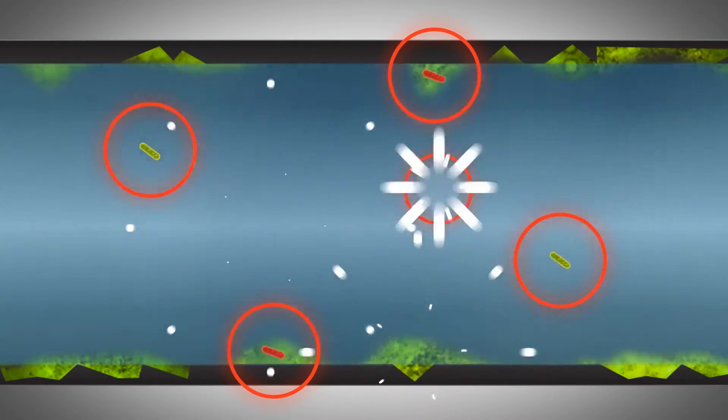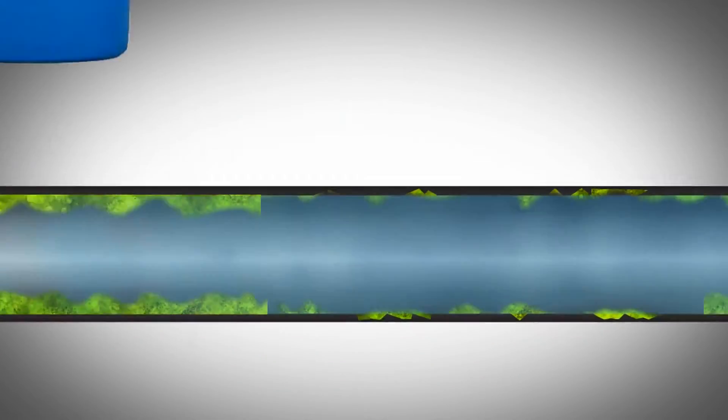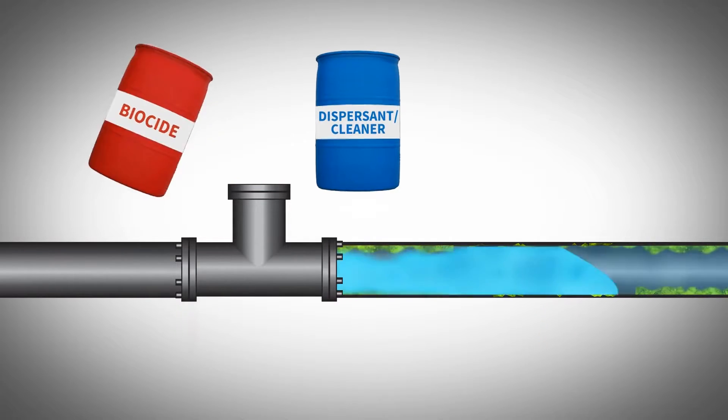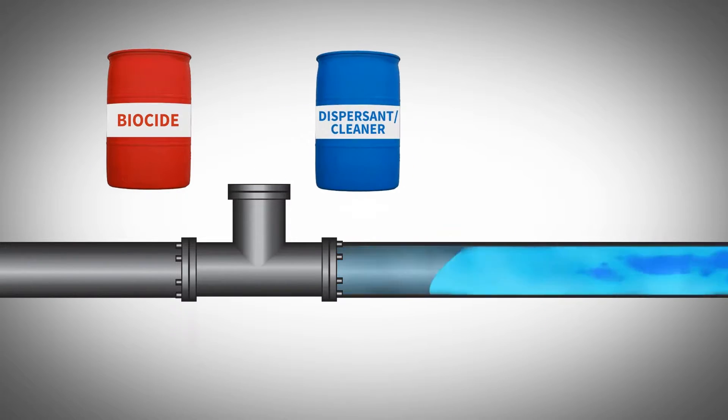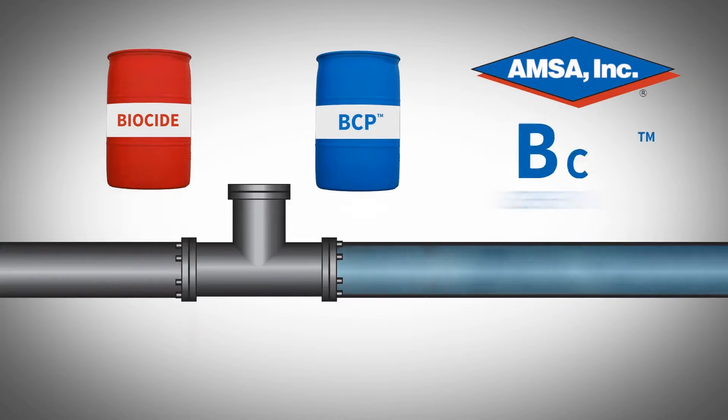A proven strategy to increase the effectiveness of biocides against biofilm bacteria is co-treatment with a biocide and an effective dispersant, cleaner, and penetrant aid, such as AMSA's BCP chemistry.